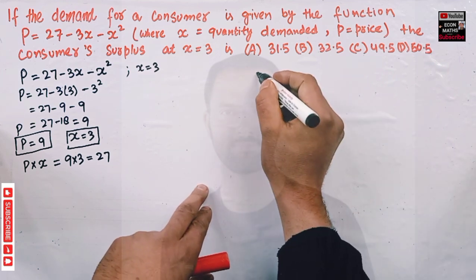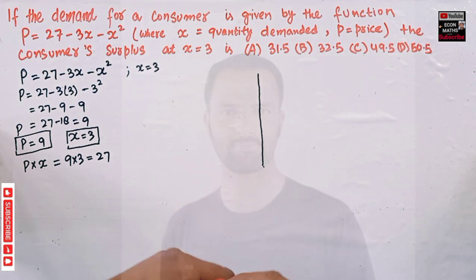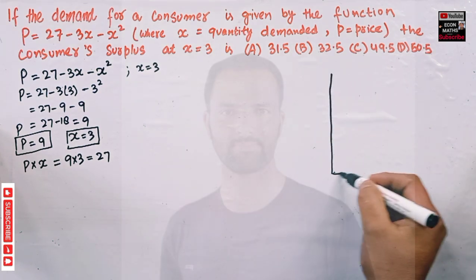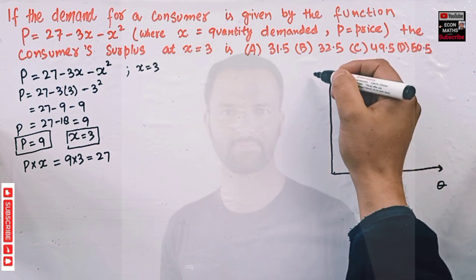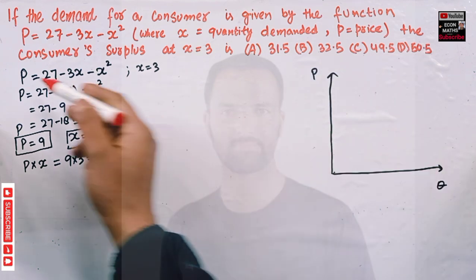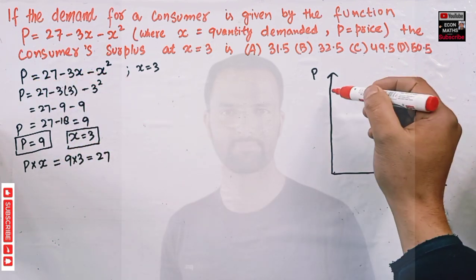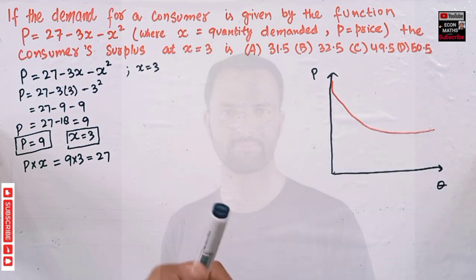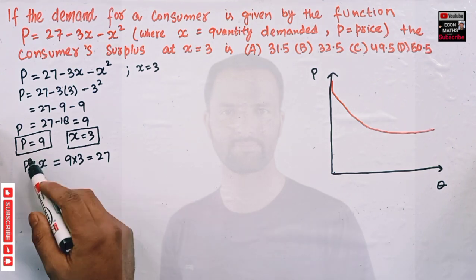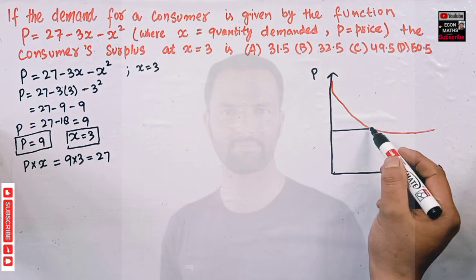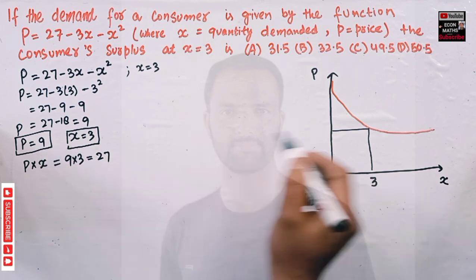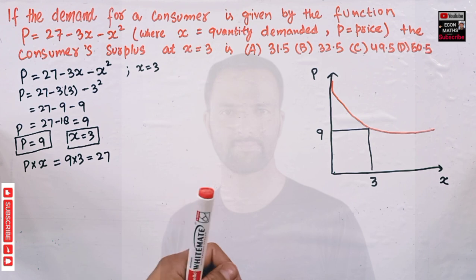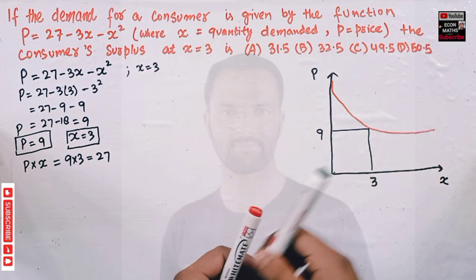Now let me show the consumer surplus graphically so that you understand it very well. Let's draw a graph with quantity on the horizontal axis and price on the vertical axis. The demand function is a non-linear curve. The equilibrium quantity is x = 3 and the equilibrium price is p = 9.